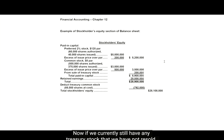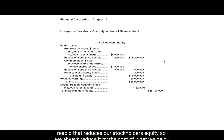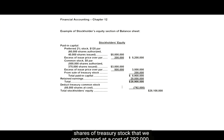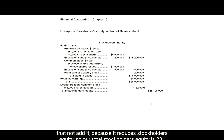Now, if we currently still have any treasury stock that we have not resold, that comes at the very end as a deduction. Because if we own some treasury stock that we haven't resold, that reduces our stockholders' equity. So we always reduce it by the cost of what we paid for that treasury stock. Let's assume that we still have 88,000 shares of treasury stock that we repurchased at a cost of $792,000. So we'll take our total above and subtract $792,000 — make sure you subtract that, not add it, because it reduces stockholders' equity. So our total stockholders' equity is $28,108,000.